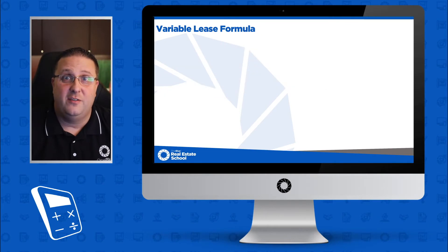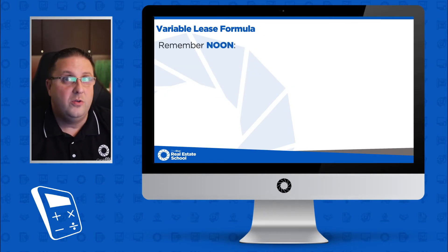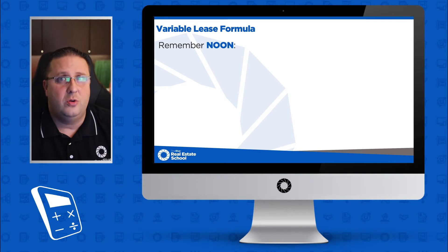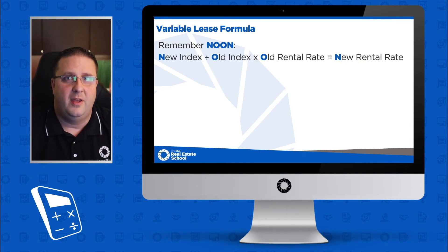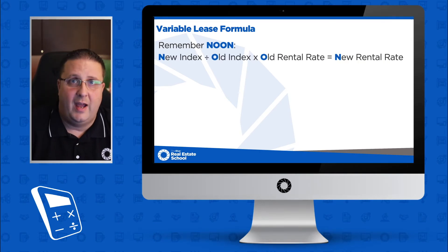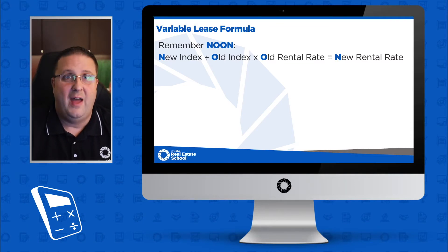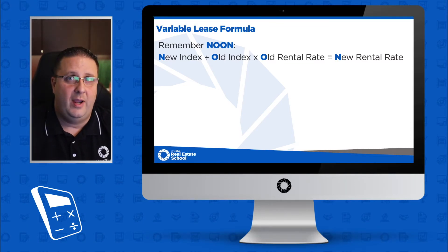Let's take a look at the formula for a variable lease. We use the word NOON to help us remember this. We're going to take the new index, divide it by the old index, multiply by the old rental rate, and that will give us our new rental rate.